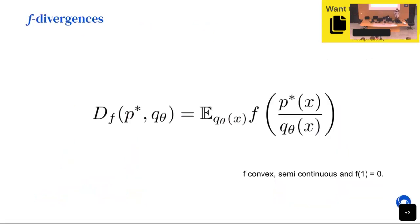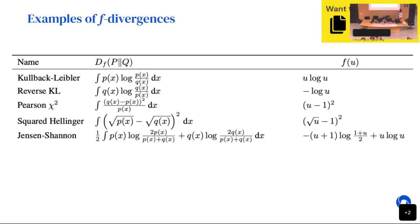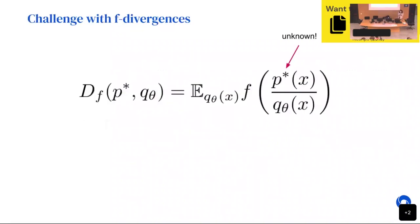F-divergences are a family of divergences defined as follows: we choose a function f that is convex, lower semi-continuous, and f(1) equals zero. With that choice, we define a divergence that is always positive and zero only when the two distributions are identical. This is nice in the sense that we have an expected value under the model, but we depend on the density ratio, which is a bit problematic — though we'll see ways to solve that. For certain choices of f, we recover KL, reverse KL, and so on.